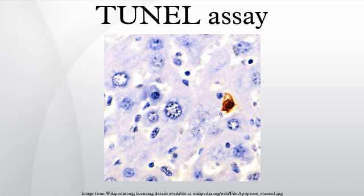However, for years there has been a debate about its accuracy, due to problems in the original assay which caused necrotic cells to be inappropriately labeled as apoptotic. The method has subsequently been improved dramatically and, if performed correctly, should only identify cells in the last phase of apoptosis.